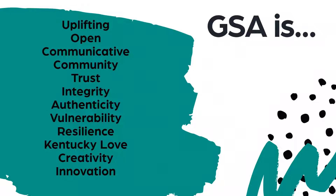In all things GSA, you can expect to encounter these values. First, GSA is uplifting — we believe each of us is capable and deserving of a bright and abundant future. GSA is open and communicative — we celebrate differences and seek out commonalities. GSA is a community — we live, learn, and grow together as many individuals contributing to something greater than the sum of our parts. GSA is built on trust and integrity, which enables authenticity, vulnerability, and resilience.